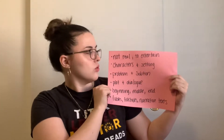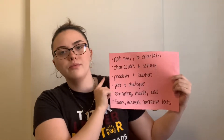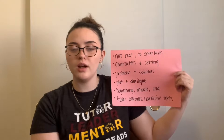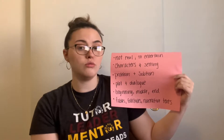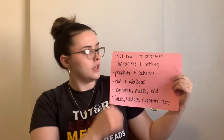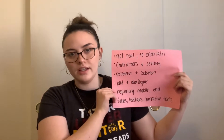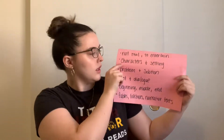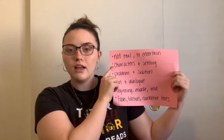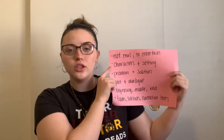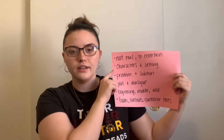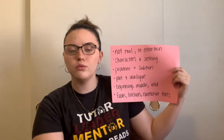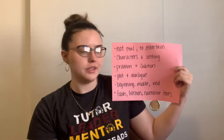Books and texts that tell us stories are not real. This means that they are made up. They can be inspired by real events or real people. These books are to entertain — the author writes them to entertain us, the reader. Books that tell us stories usually have characters and a setting. A setting means it has a place where the book is set, where it happens.